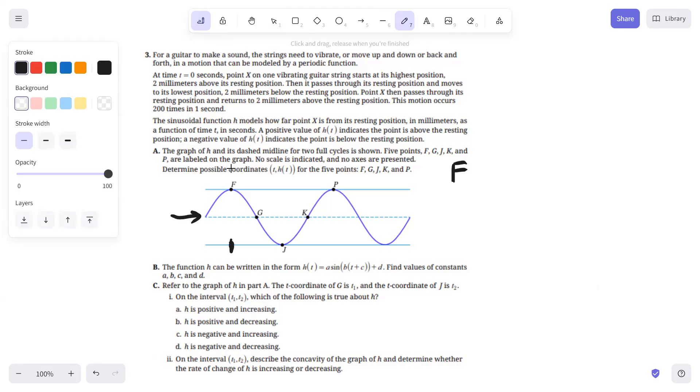G is right at the midline, so that would be at zero. J has a y value of negative two. K has a y value of zero. And P is going to have a y value of two. Now we need to get the corresponding T values.